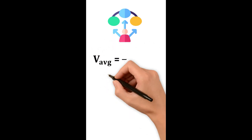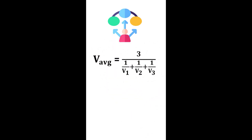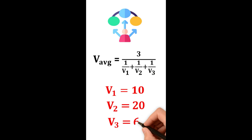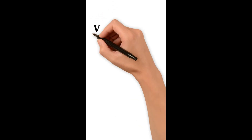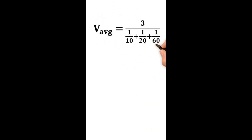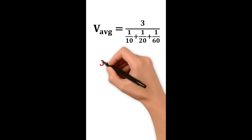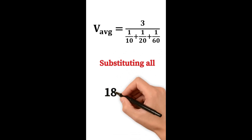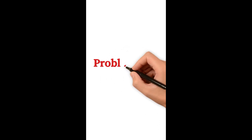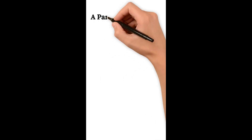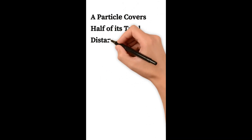With three equal parts, v_average = 3 divided by (1/v1 + 1/v2 + 1/v3). Here v1 = 10, v2 = 20, and v3 = 60. Substituting: v_average = 3 / (1/10 + 1/20 + 1/60). This gives an average speed of 18 km/h.